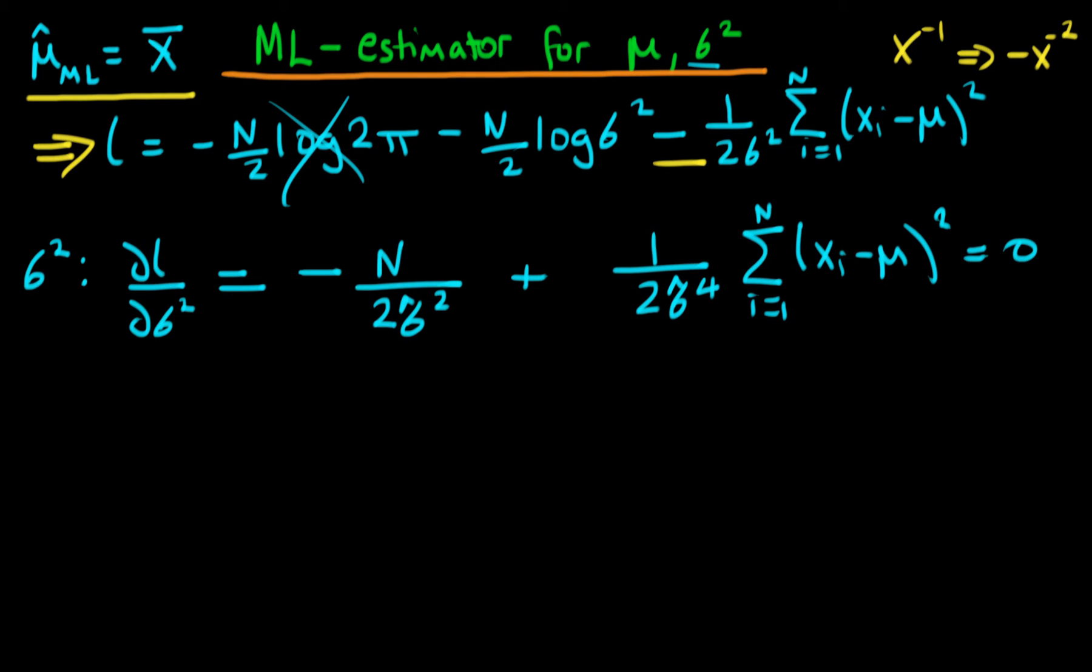If we then go ahead and rearrange this thing, we're actually going to find that sigma hat squared maximum likelihood is just 1 over N times the sum from i equals 1 to N of xi minus mu squared.